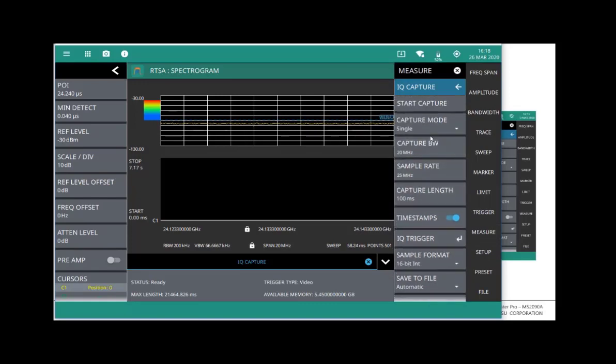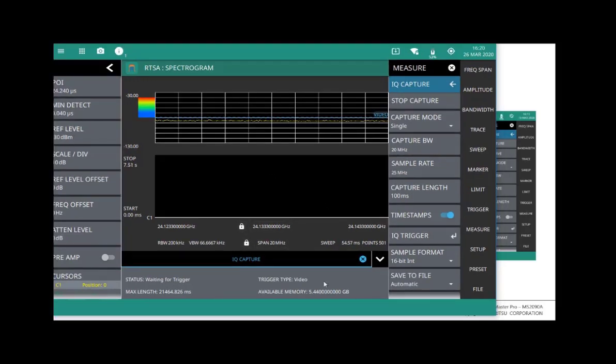Right, and now, because my trigger type is set to video, when I hit start capture, it's going to be waiting for a trigger. So essentially, it's waiting for some stimulus to cross that level line. So as soon as I get a stimulus there, you can see that it started saving. It's now saved the data, the IQ capture is complete, the file is saved, and then if I go into the file menu of the instrument, I can go in there and pull out that file and have it ready for post-processing.